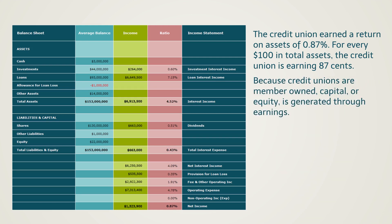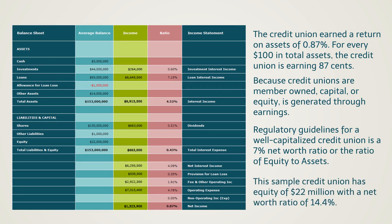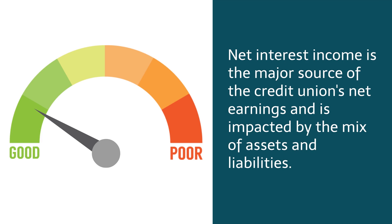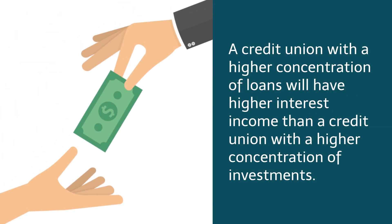Because credit unions are member-owned, capital or equity is generated through earnings. Regulatory guidelines for a well-capitalized credit union is a 7% net worth ratio. Net worth is the ratio of equity to assets. Our sample credit union has equity of $22 million, with a net worth ratio of 14.4%. We learned from this sample balance sheet that there are several factors impacting how well the credit union performs. Net interest income is the major source of the credit union's net earnings and is impacted by the mix of assets and liabilities. A credit union with a higher concentration of loans will have higher interest income than a credit union with a higher concentration of investments.